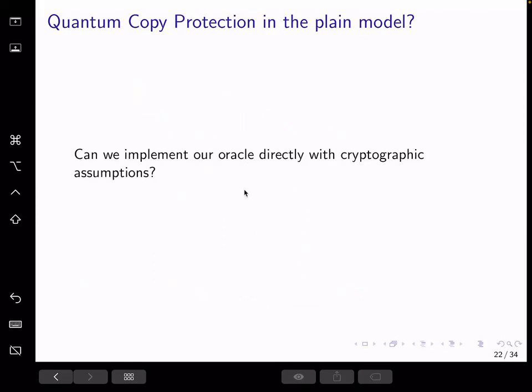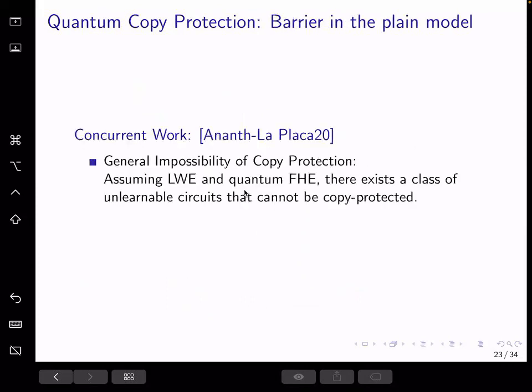So now we already have the oracle construction, we probably wonder if we can move to a construction using more practical cryptography assumptions. Unfortunately, we do have a barrier in the plain model when we want to remove the oracles. A concurrent work shows that using a post-quantum cryptography assumption called learning with errors, and the quantum fully homomorphic encryption scheme, we can build a circuit that is unlearnable, but can never be copy protected.